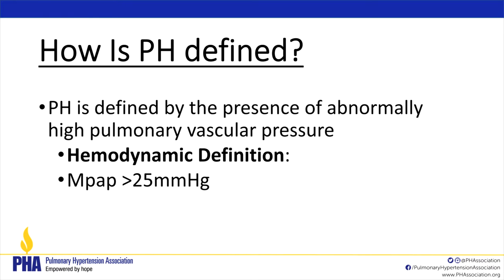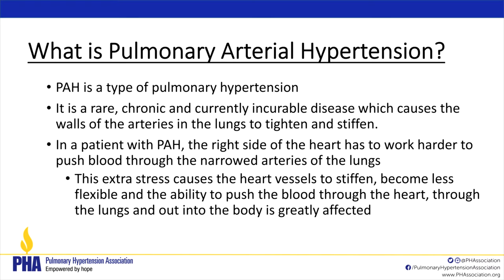As a provider, this is what we look at to figure out what's going on with you. The definition is defined by the presence of abnormally high pulmonary vascular pressure. You've probably heard the word hypertension — a lot of people have high blood pressure — but this is high pressure not in your body, but in your lungs. The hemodynamic definition is a mean pulmonary arterial pressure greater than 25 millimeters of mercury.